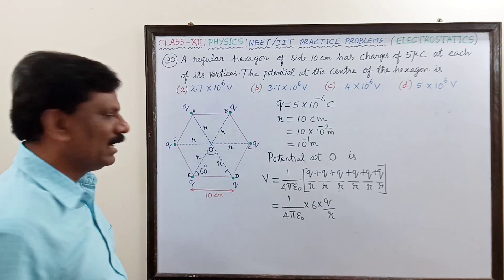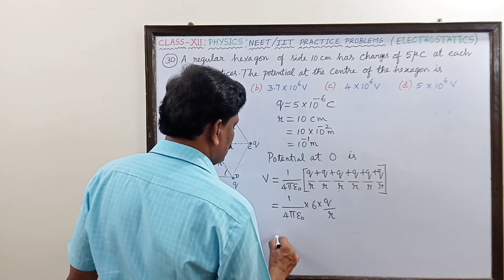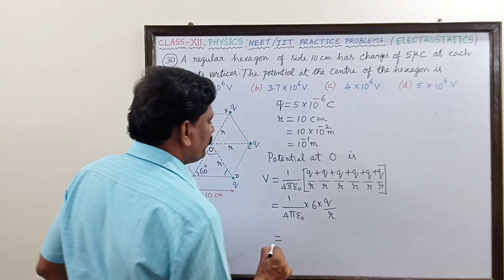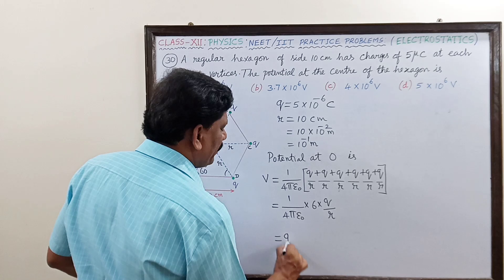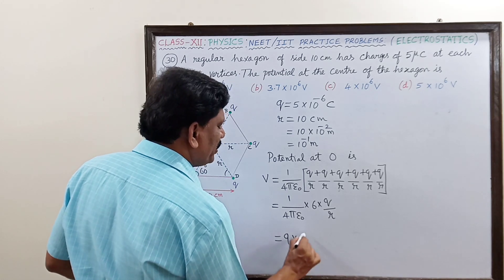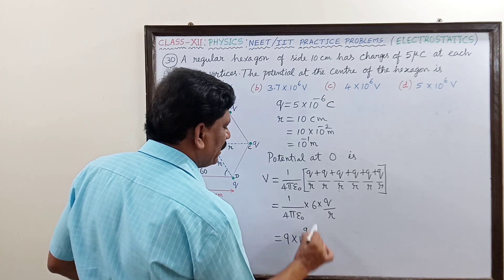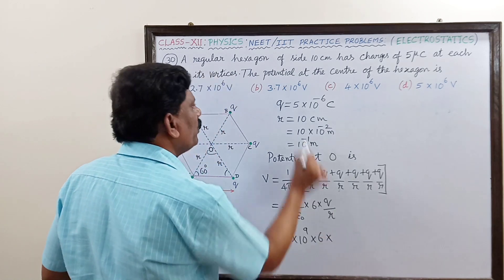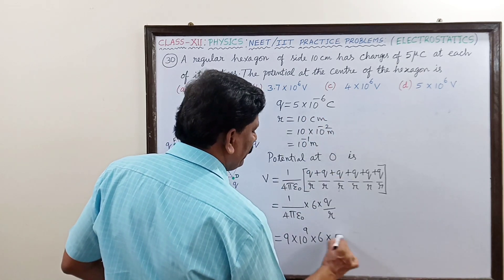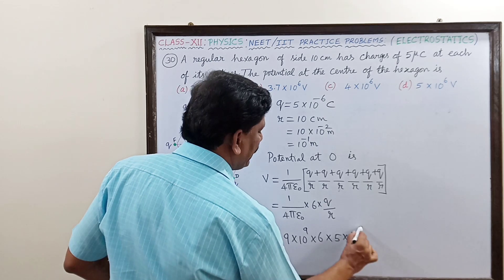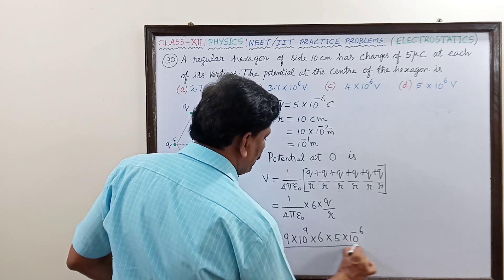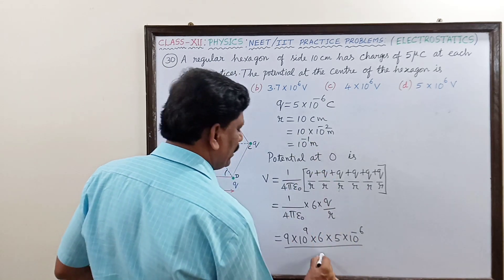So this is now equal to 1 by 4 pi epsilon naught, value can be substituted as 9 into 10 power 9, into 6, into Q equal to 5 into 10 to the power of minus 6, divided by r equal to 10 power minus 1.